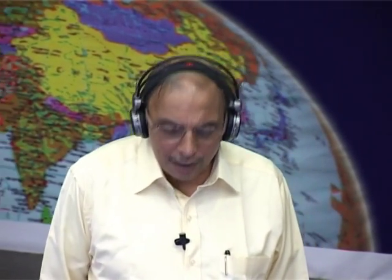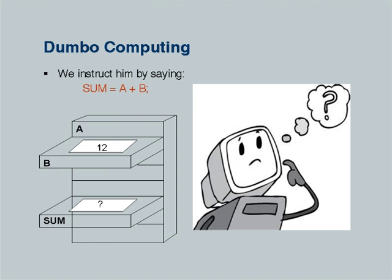We instruct Dumbo to do this computation by saying 'sum = A + B'. It is tempting to emphasize that this is expression evaluation, an assignment operation, and not an equation — but I submit we should desist from doing any of these things in our first introductory lecture. It is adequate to say the instruction tells Dumbo to add two values in drawers A and B and put the result in the drawer called sum. Students will adequately understand this to be an instruction to Mr. Dumbo to add two values and put the result in the designated drawer.